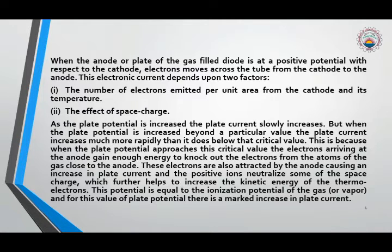As the plate potential is increased, the plate current slowly increases because of the space charge and the number of electrons. Because initially the number of electrons are less. But when the plate potential is increased beyond a particular value, which is the ionization potential, the current value increases more rapidly than it does below that value.